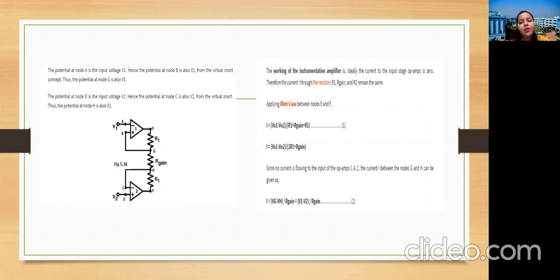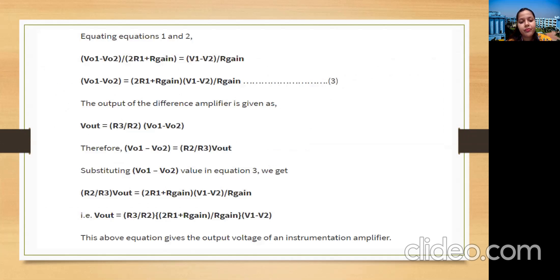The working involves taking the outputs of op-amp one and op-amp two separately, then applying both to the differential amplifier (op-amp three) to produce the final output. The difference V01 − V02 is calculated, and the output Vout is proportional to this difference, giving the amplified differential signal.